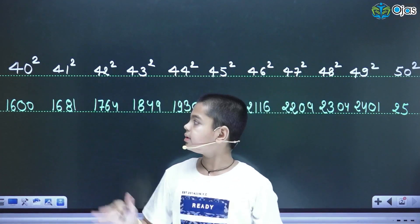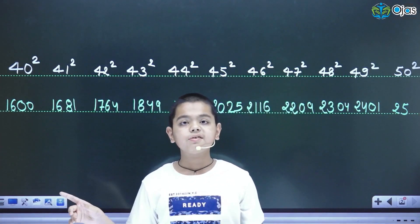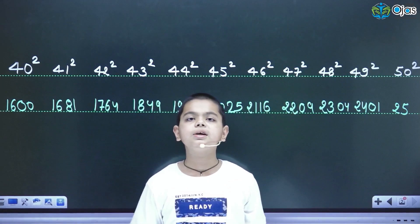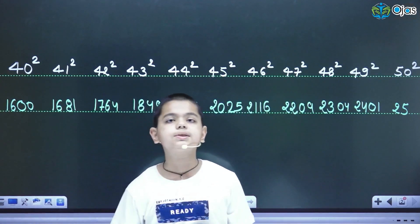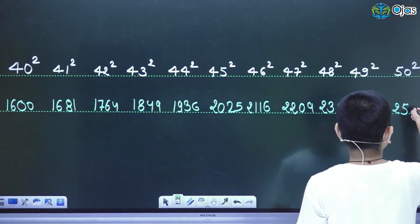Now I already said you in the first that whenever the 0 comes, the complement of 0 is also 0 and the square of 0 is also 0. So we will write here 2500.